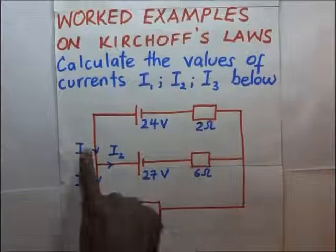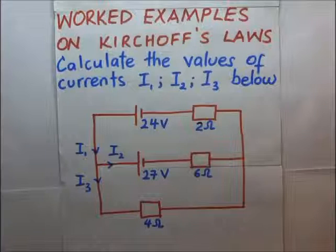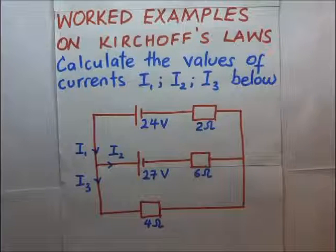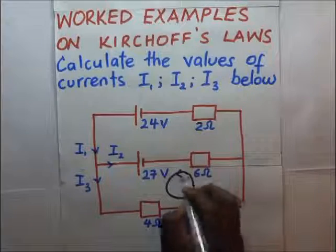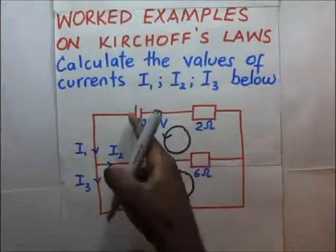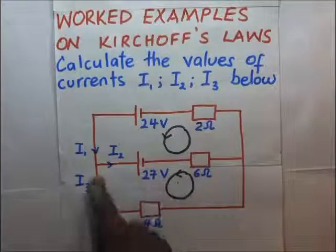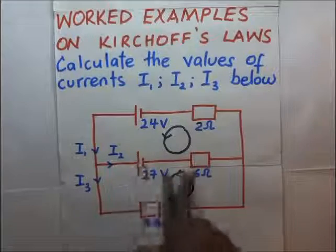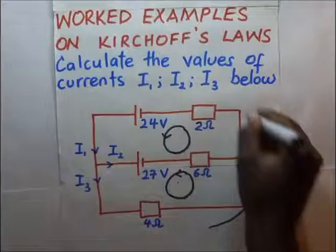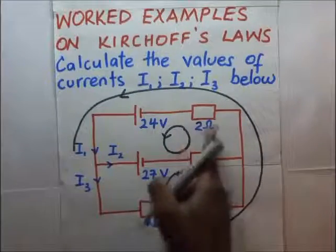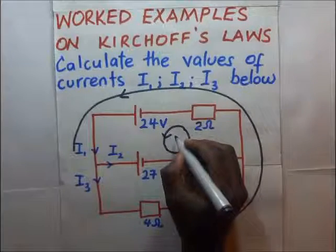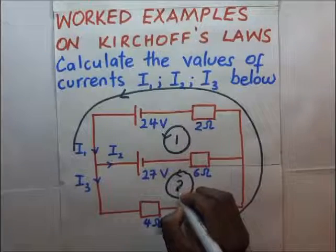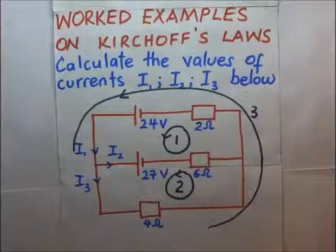We calculate the amount of current I1, I2, and I3 in this circuit. The first thing we shall do is draw our loops. We choose whether our loops shall be in the clockwise direction or in the anti-clockwise direction. We have this loop, that loop, and this loop, which we shall call loop number 1, loop number 2, and loop number 3.